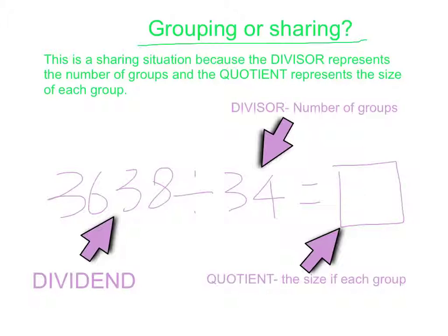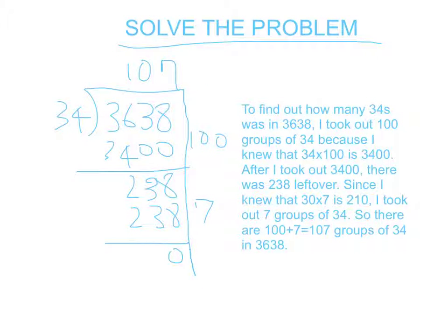This is a sharing situation because the divisor represents the number of groups and the quotient represents the size of each group. I use partial quotients to solve this problem.